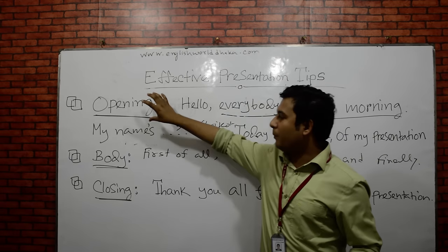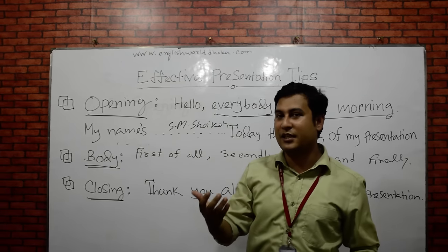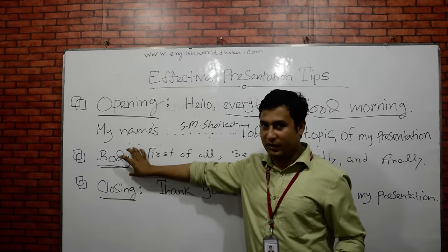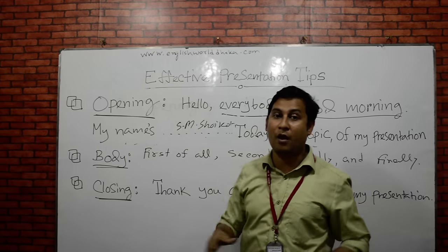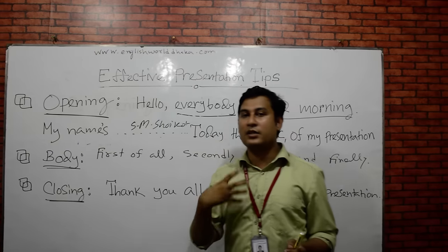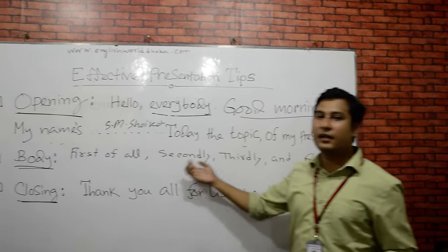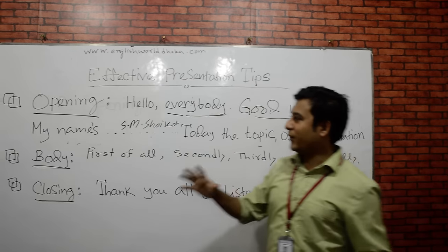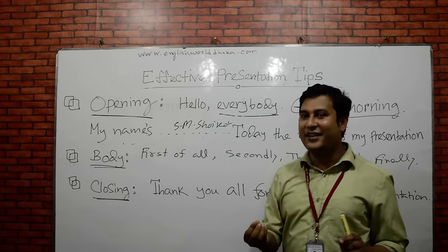Overall, you can see that a presentation has three parts: an opening, a body, and a closing. In my next lesson I'm going to talk about the body paragraph — how to put together all ideas by using linkers and cohesive devices like 'first of all,' 'secondly,' 'thirdly,' and 'finally.'